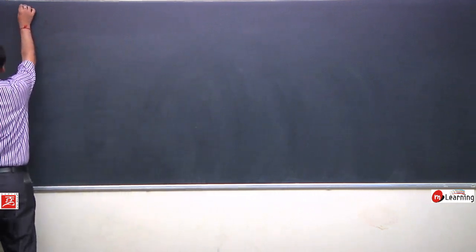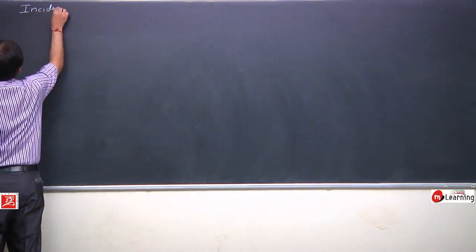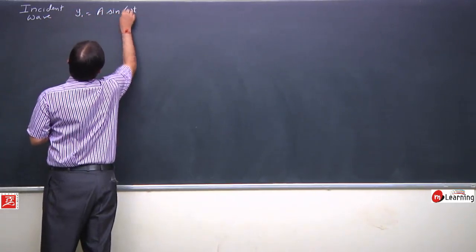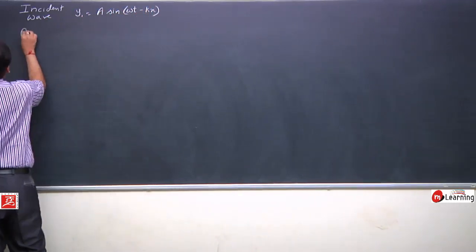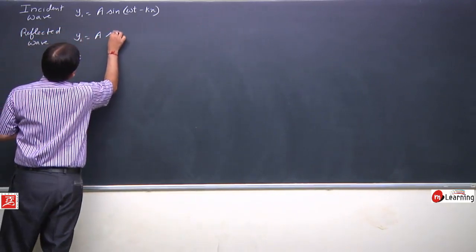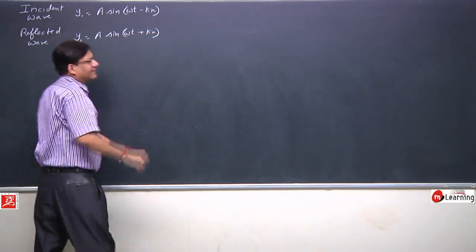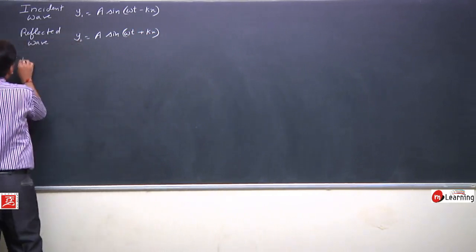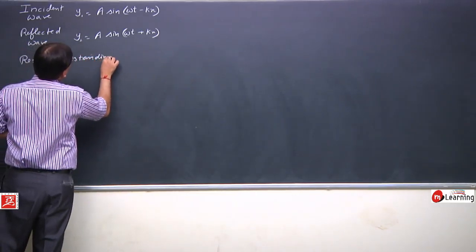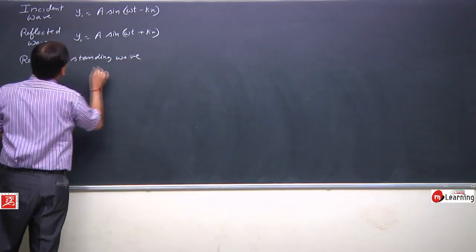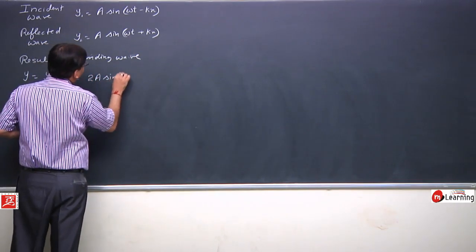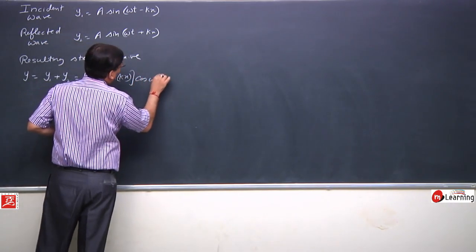Look here. The incident wave equation is written as Y1 = A sin(ωt − kx). The reflected wave equation is Y2 = A sin(ωt + kx). When these two waves superpose, they result in a standing wave. The resulting standing wave is given by Y = Y1 + Y2 = 2A sin(kx) cos(ωt).